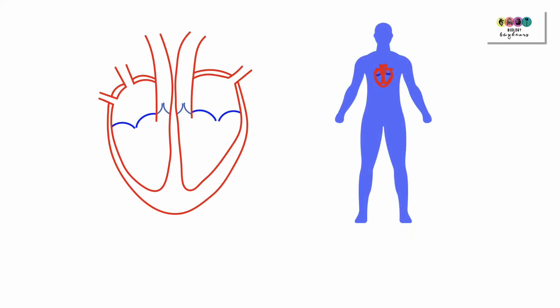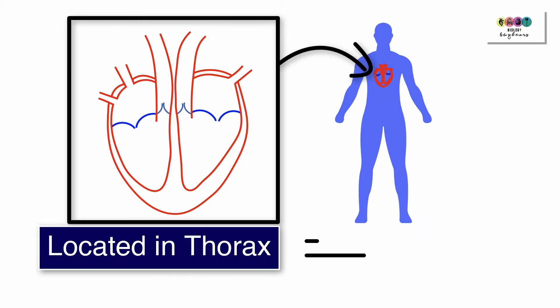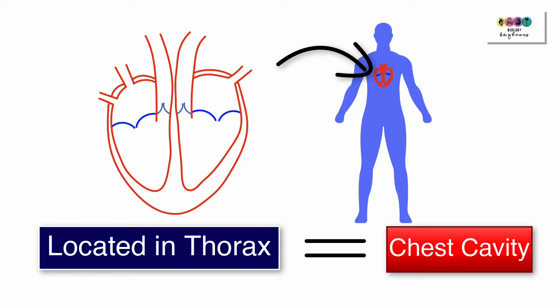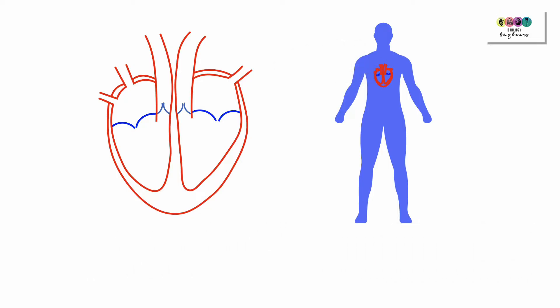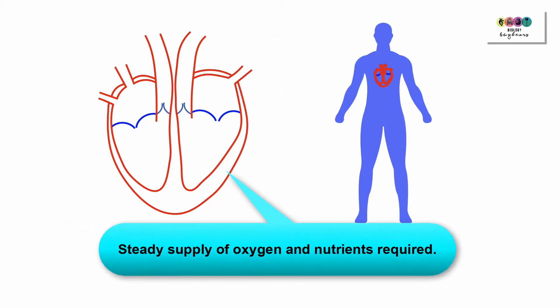Central to your circulatory system is the heart. It's a muscular pump located in your thorax or chest cavity just in between your lungs. It's about the size of your fist and it beats on average 72 beats per minute. So you can imagine that the cells that make up this muscular pump require a lot of oxygen and nutrients.